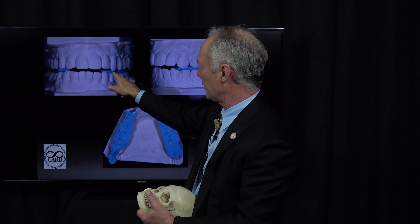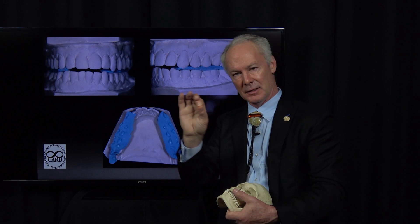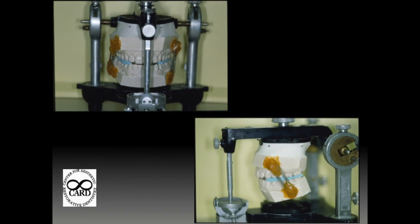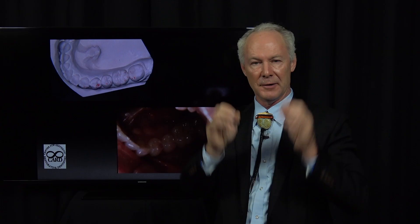Place the occlusal registration record on the upper teeth and mount the lower model to that record. You've already mounted the upper model; now seat the lower model with the occlusal registration record. Trim the bite record so only the cusp tips are in it — if you've got the sides on the record, the bite will be too open and inaccurate. You've got to trim it back where you just have the cusp tips. This is a centric relation record at an open vertical dimension to make room for an appliance — either a night guard or an occlusal orthotic appliance.